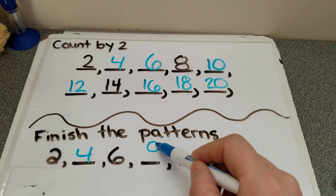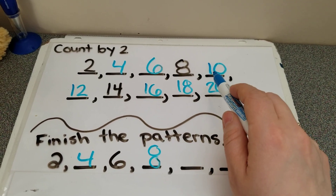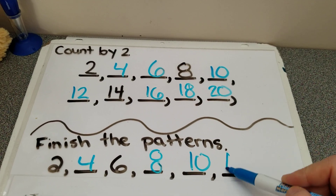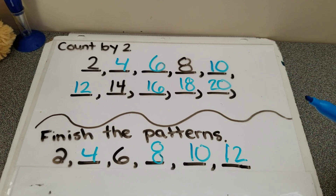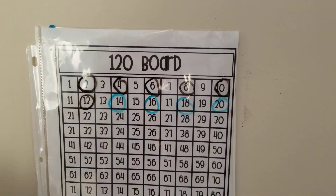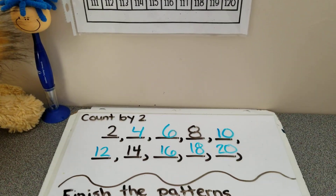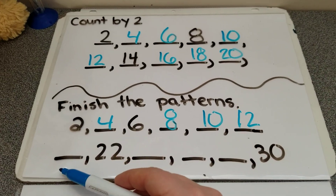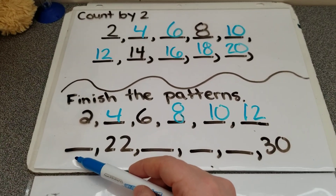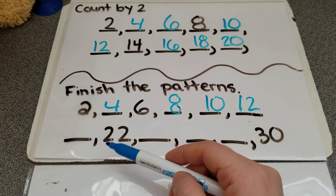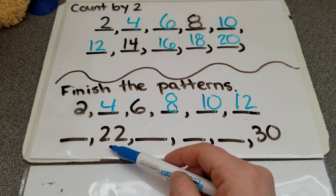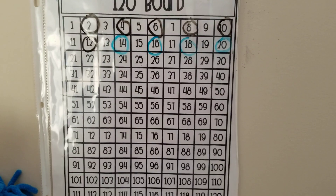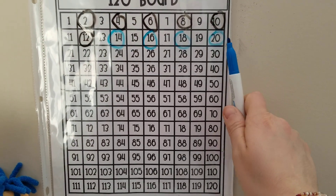And what's next? Eight, ten, twelve. So it's very similar to what we just did, and remember we can always use our 120 board. This one is a little tricky, though, because it doesn't start at two — it starts at a blank that's before the number 22. This is gonna take some thinking. So let's look up here — we don't have the number 22 circled, let's keep going.